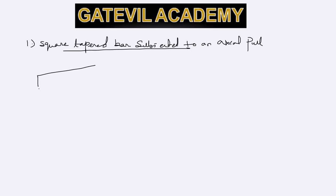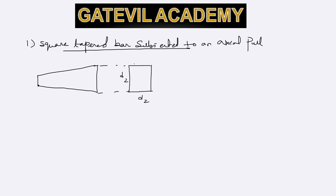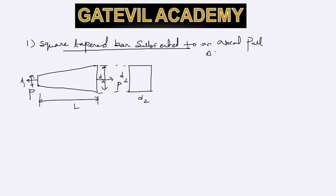Here we have a square tapered bar. The cross-sectional area at one end has side d2, and at the other end the sides are of length d1. The ends are subjected to an axial pull P and the length of the bar is L. We found earlier that the elongation in a bar of uniform cross-section is PL by AE, where A is the cross-sectional area, P is the axial load, L is the length, and E is Young's modulus.